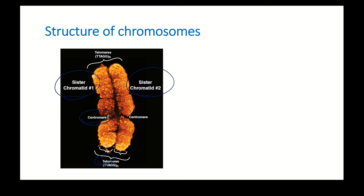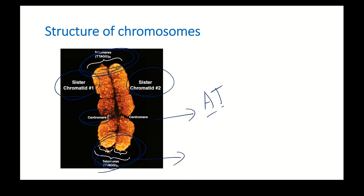Telomere means far — there are two telomeres in a chromosome. Centromere is the center portion, but that does not mean it is the exact geometric center — centromere can be anywhere. The telomere is the end of the chromosome. Centromere is rich in AT (adenine-thymine), while the telomere is rich in GC.